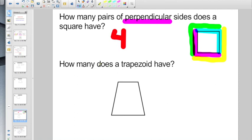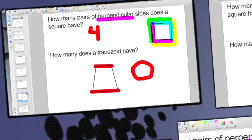How about this one? How many does a trapezoid have? This side is not perpendicular to any other sides. This side down here is not perpendicular to any other sides. Perpendicular means they have to meet and form 90-degree angles. Do you see a 90-degree angle anywhere in this shape? No, you should not. So how many does it have? A big old zero, right?